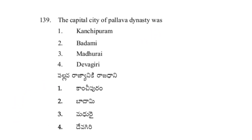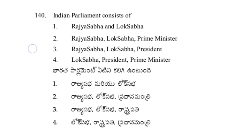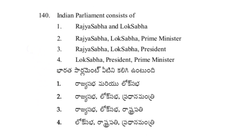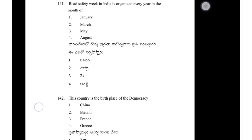The capital city of Pallava dynasty was Kanchipuram — option 1. Indian Parliament consists of option 3 — Rajya Sabha, Lok Sabha, and President.